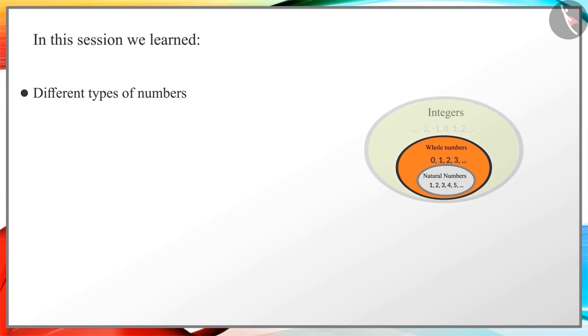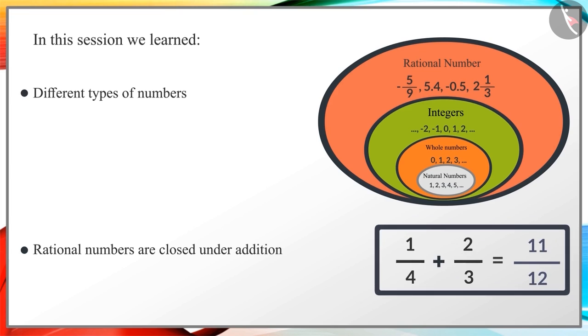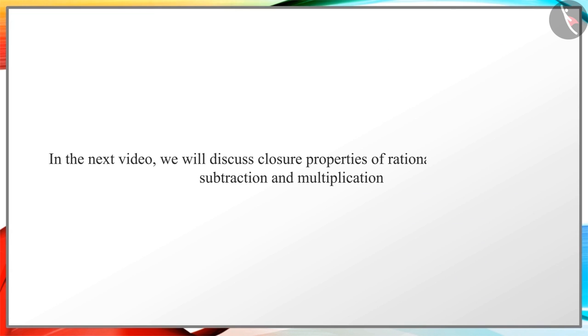Children, in this session we learned about different types of numbers such as natural numbers, whole numbers, integers, and rational numbers. We also verified the closure property under addition of rational numbers. In the next video we will discuss closure properties of rational numbers under subtraction and multiplication. That's all in this session. See you in the next session. Thank you.